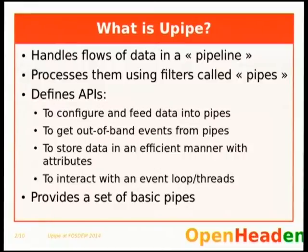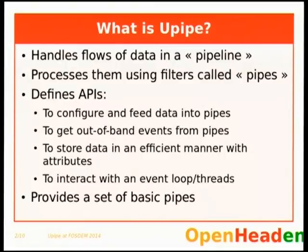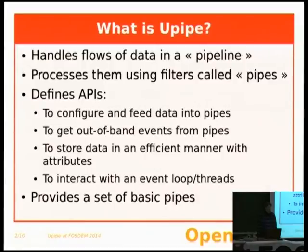The pipeline is composed of modules that we call pipes. U-Pipe is a framework that defines APIs that allow first to configure the pipes. Typical configuration commands would be: send your output to this other pipe — that is the U-Pipe Set Output command — or open this file for reading or writing. There is an API to feed data into the pipe, as a packet to process.